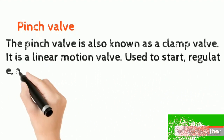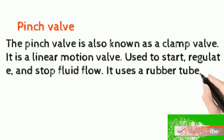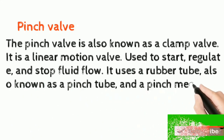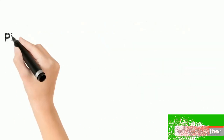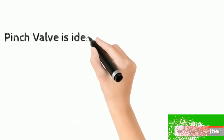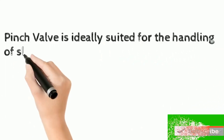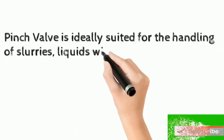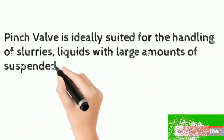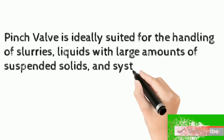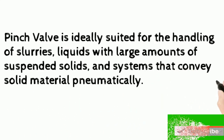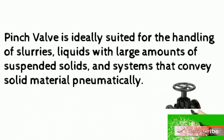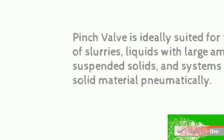The pinch valve is also known as a clam valve. It is a linear motion valve used to start, regulate, and stop fluid flow. It uses a rubber tube, also known as a pinch tube, and a pinch mechanism to control the fluid. Pinch valve is ideally suited for handling slurries, liquids with large amounts of suspended solids, and systems that convey solid material pneumatically.